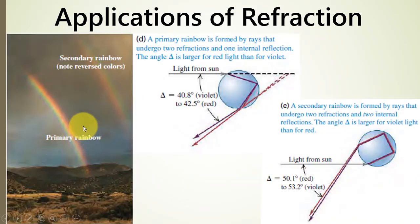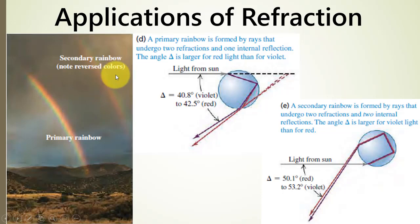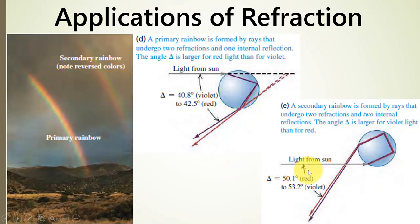Normally we see the primary rainbow because it is more intense. There is another rainbow called the secondary or auxiliary rainbow, where the colors are upside down. When the light ray hits the upper part of the rain drop, it causes two refractions and one internal reflection, producing the primary rainbow. When the light ray hits the lower half of the rain drop, it causes two refractions and two internal reflections.